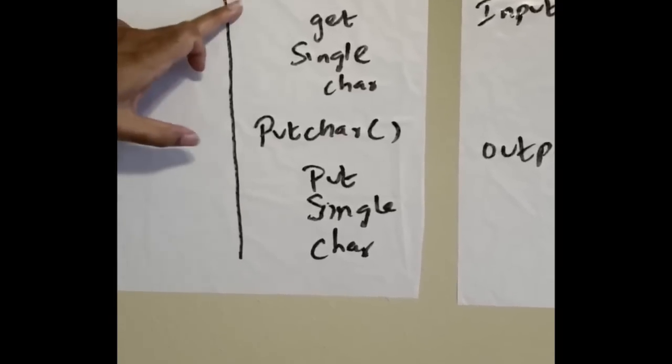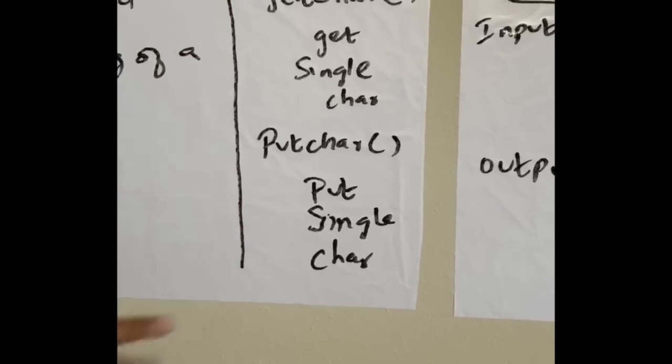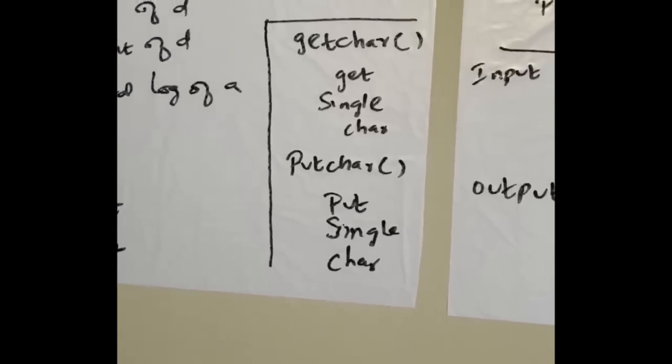Putchar puts the value on the screen. This is input function, this is output function. We use all this in C programs - I'll explain later.